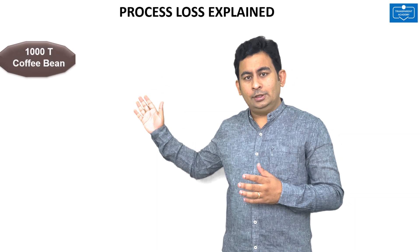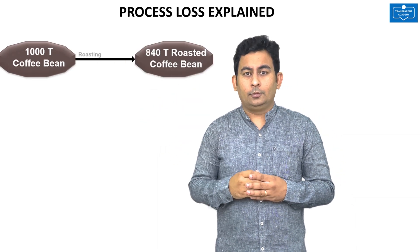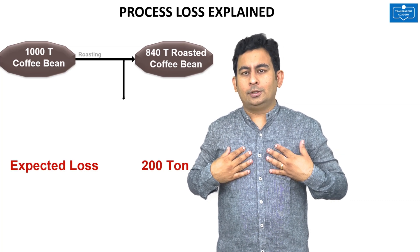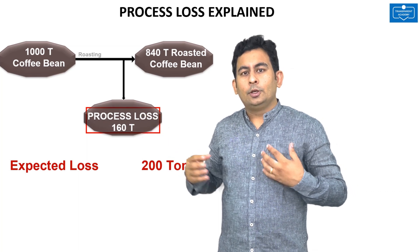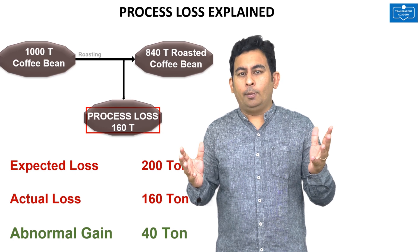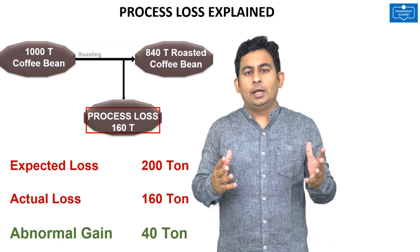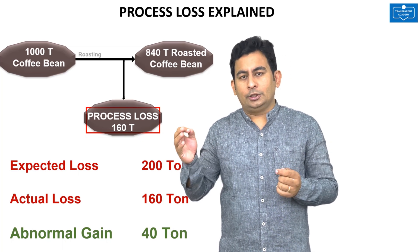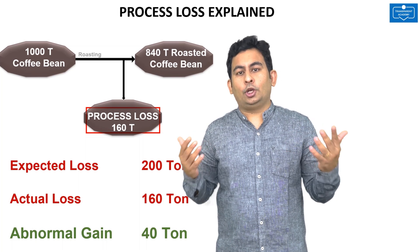Let's look at another occasion where I am introducing 1000 tons and getting 840 tons of output. My expected loss was 200 tons but the actual loss is only 160 tons, so the difference of 40 tons is considered as abnormal gain. Now that we have understood normal loss, abnormal loss, and abnormal gain in a process, let's proceed to how it is treated in process costing.